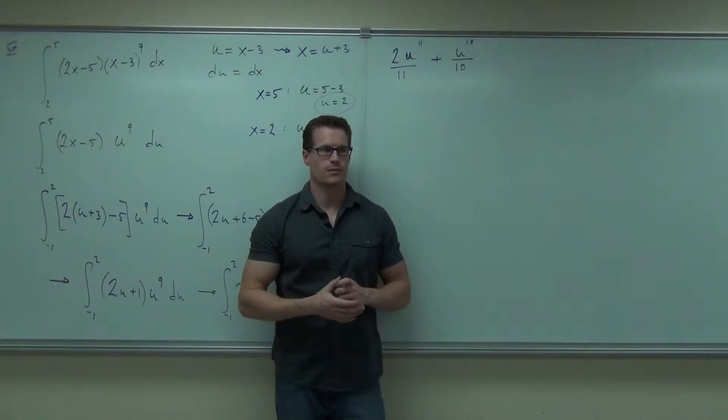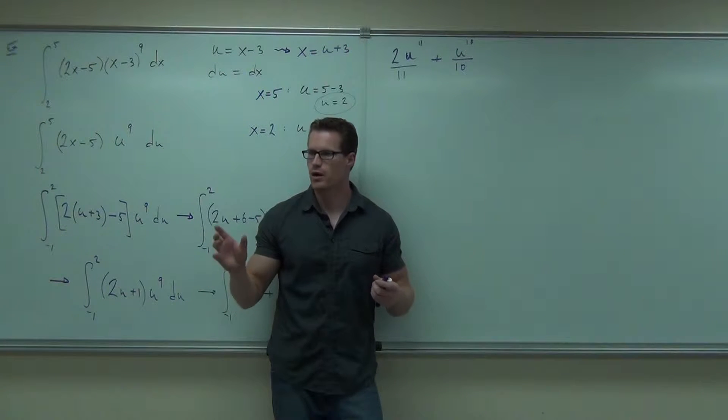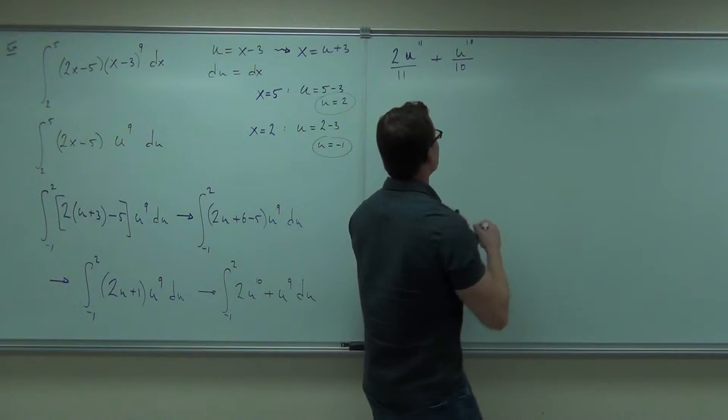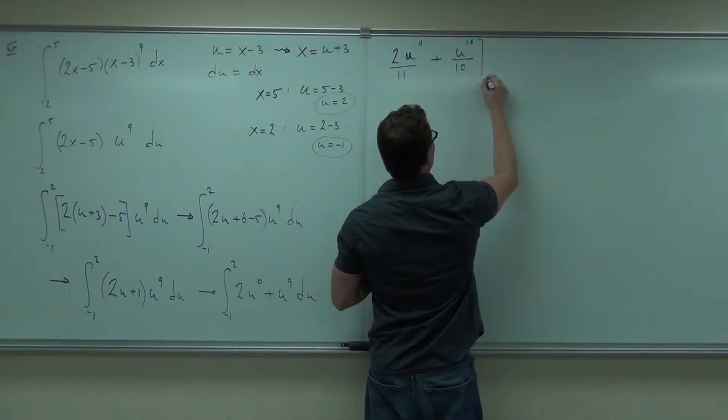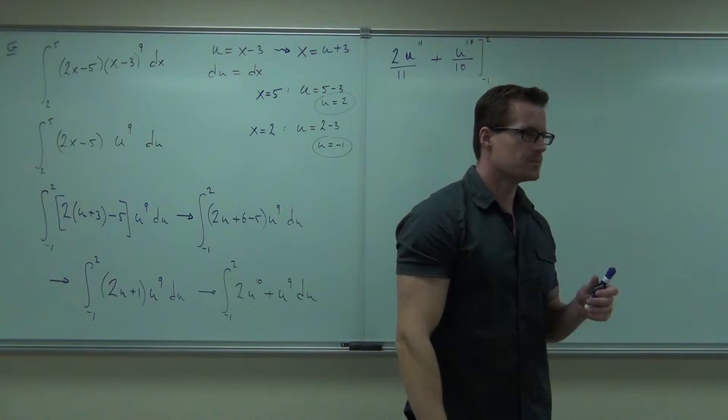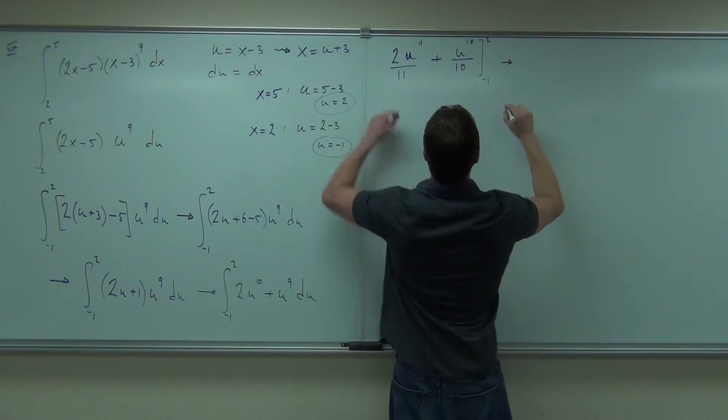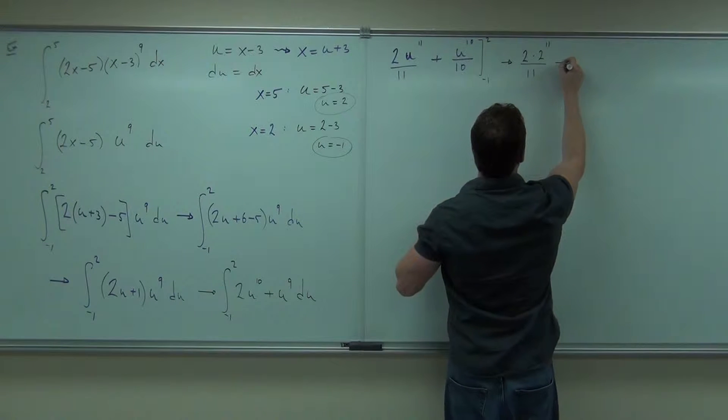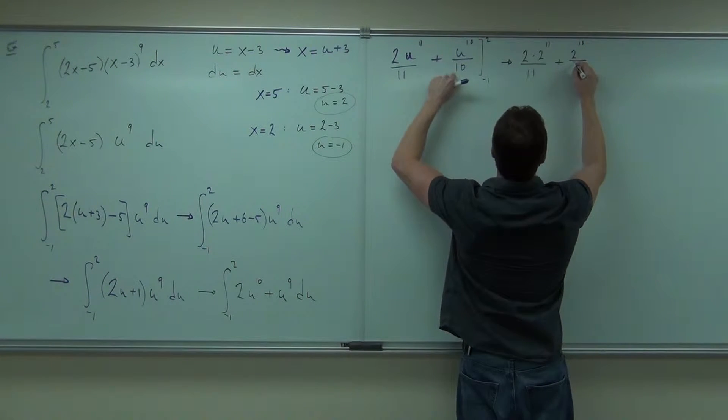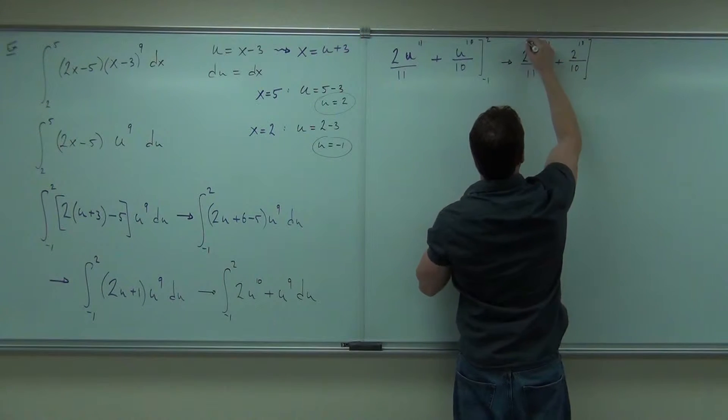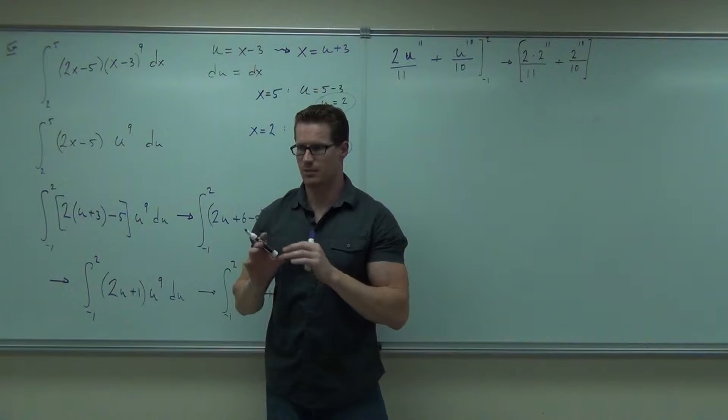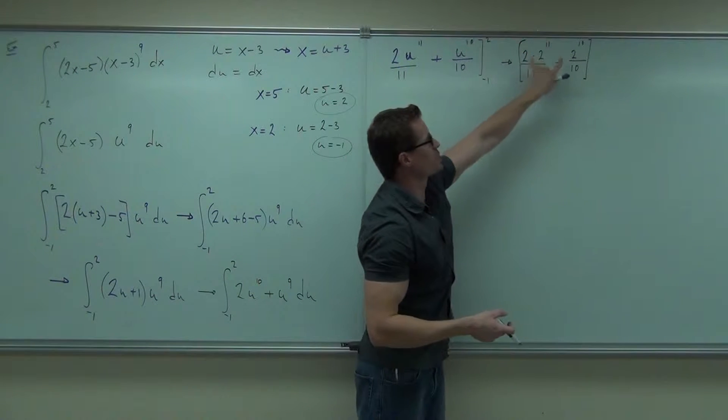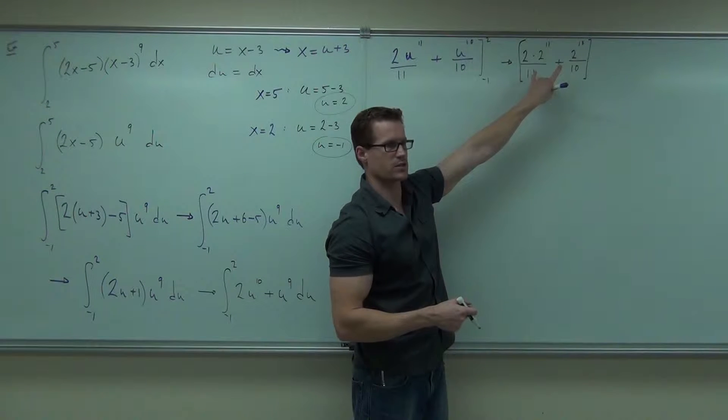Now what do we do? Good. Because we changed the bounds first, we know that our bounds are in terms of u, not in x anymore. These were in x's, those were in u's. So as soon as we get down to the very end, it's now evaluation time. Just make sure you evaluate very carefully. We're going to get 2 times 2 to the 11th over 11, 2 to the 10th over 10. That happens from when we plug in the 2. We've got to plug it into both those terms. So this piece right here is just the 2 evaluated. Are you all right with that so far? Yes or no, ladies and gentlemen? Yes. Okay.